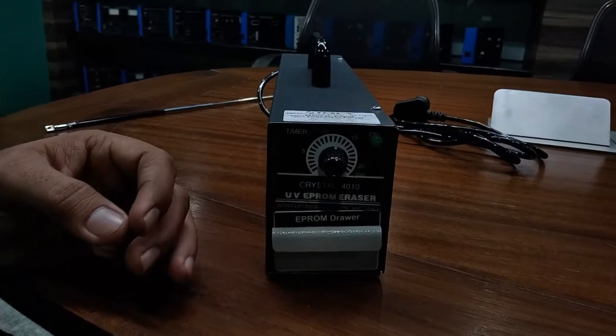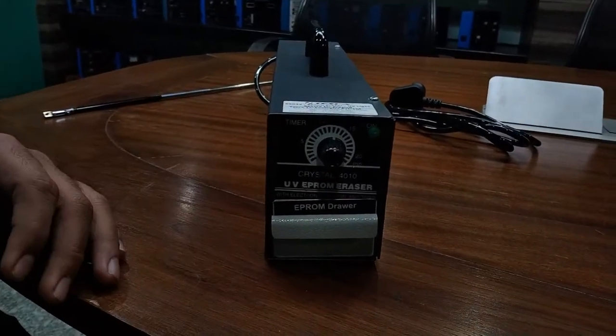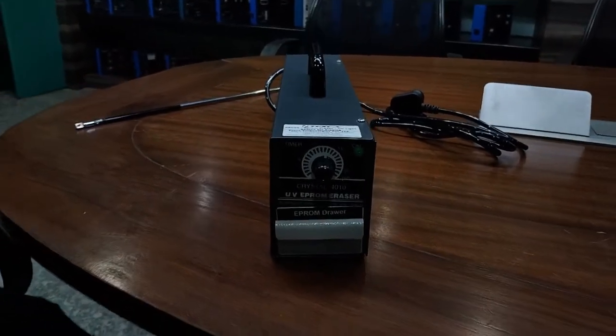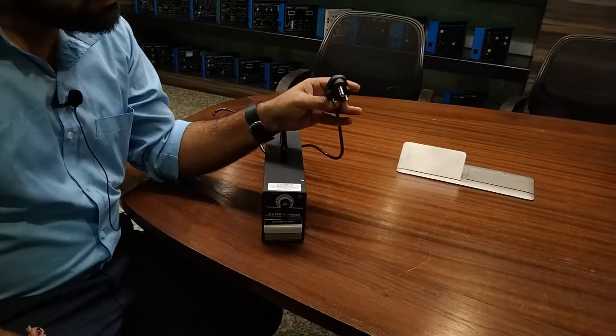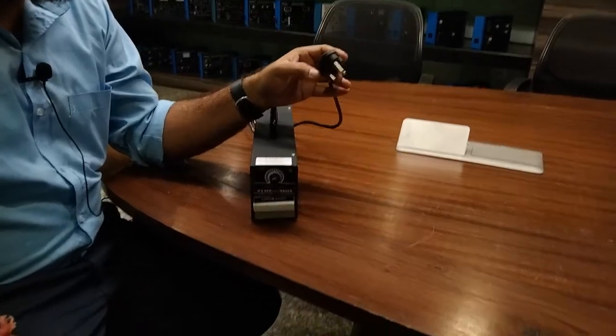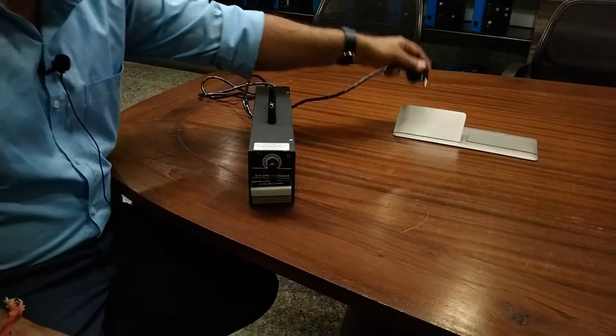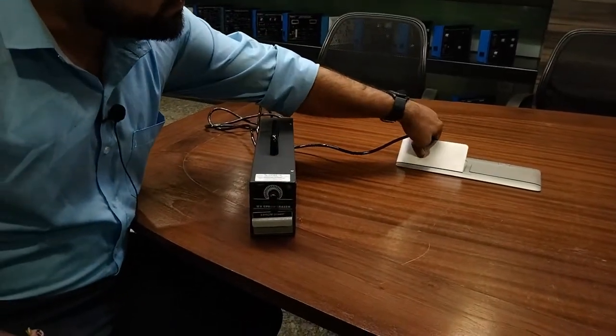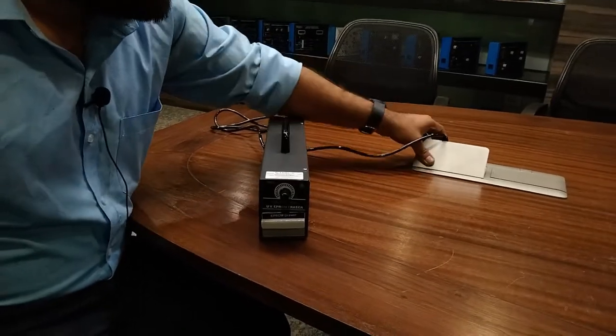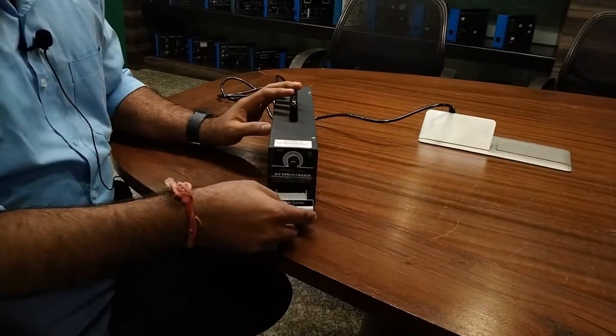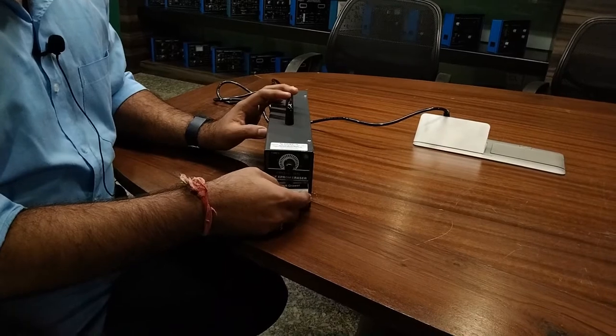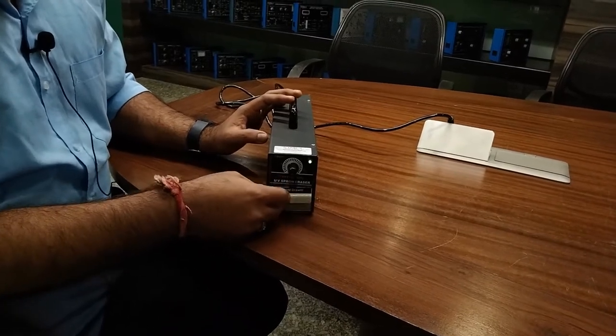For starting the EPROM we are now going to connect this EPROM with the power supply. This is the power adapter of this EPROM eraser. Plug this power adapter in any 220 volt AC power source and then open and close the door again properly.